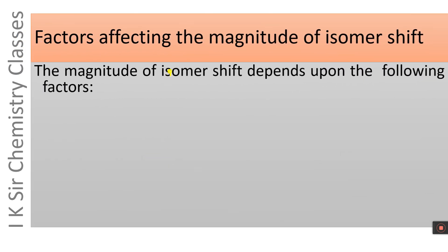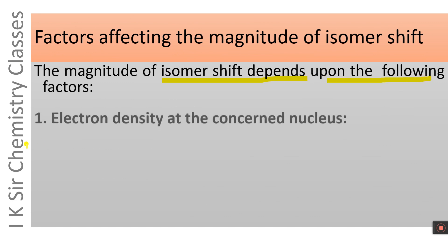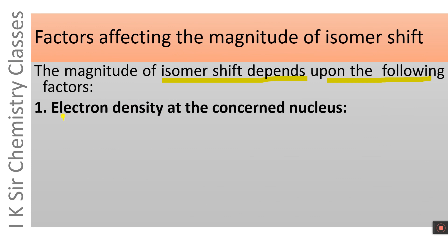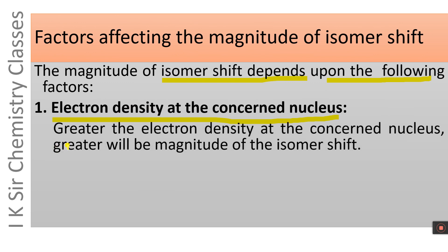The magnitude of isomer shift depends upon the following factors. The most important factor is electron density at the nucleus. Greater the electron density at the concerned nucleus, greater will be the magnitude of isomer shift. The magnitude of isomer shift increases with an increase in electron density at the concerned nucleus.